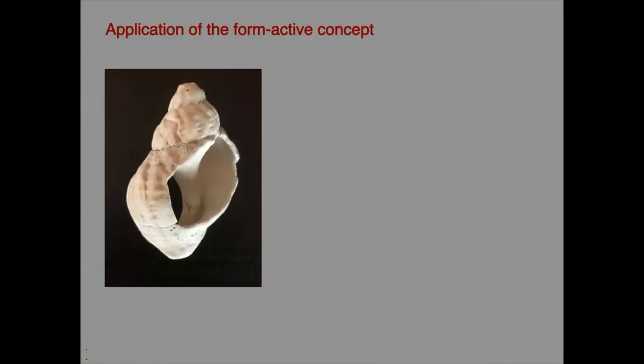The concept of the form active structure can be applied to any object — so let's look at this shell. In this age of desire for low carbon architecture, which involves efficient structure, structures that occur in nature — in the stems of plants, in the bones of birds' wings, and in seashells — are often looked to for ideas for efficient designs.